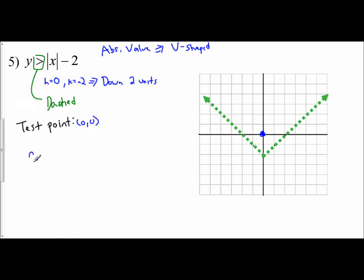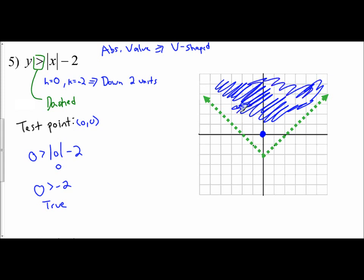So plug in 0 for y. Is 0 greater than the absolute value of 0 minus 2? Absolute value of 0 is 0. So is 0 greater than 0 minus 2, which is negative 2? And the answer is yes, that's a true statement. So what that means is my solution region is in the region that contains this point. So it's everything inside that V shape. And so here is my solution region.